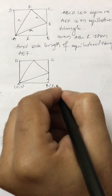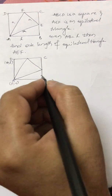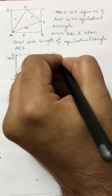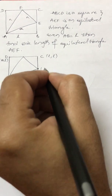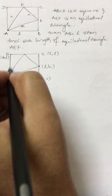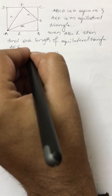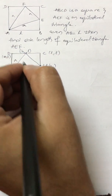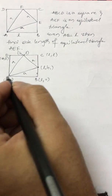So B will be (l, 0), D will be (0, l), and C will be (l, l). Now I will consider this height as h1, so E is at (l, h1). This other height I will call h2, so F is at (h2, l). Each side of the equilateral triangle is a. So this is a, this is a, this is a. Now we use the side length a. Let us say this vertex is E, and this is F.